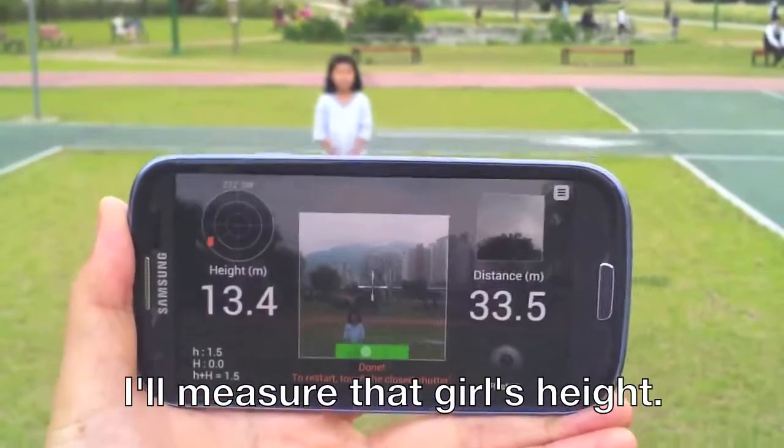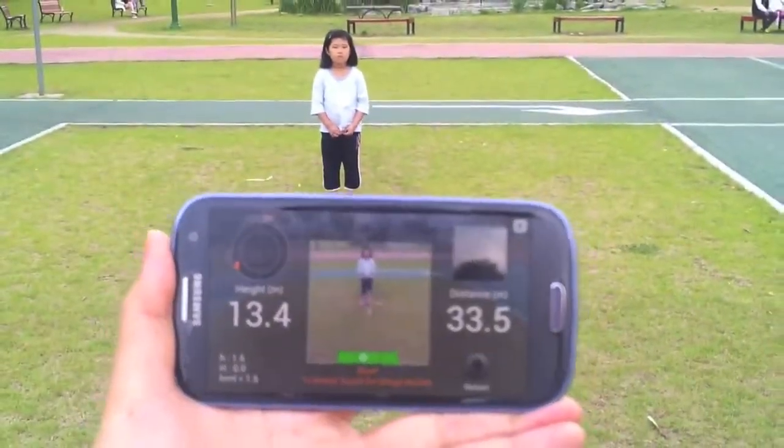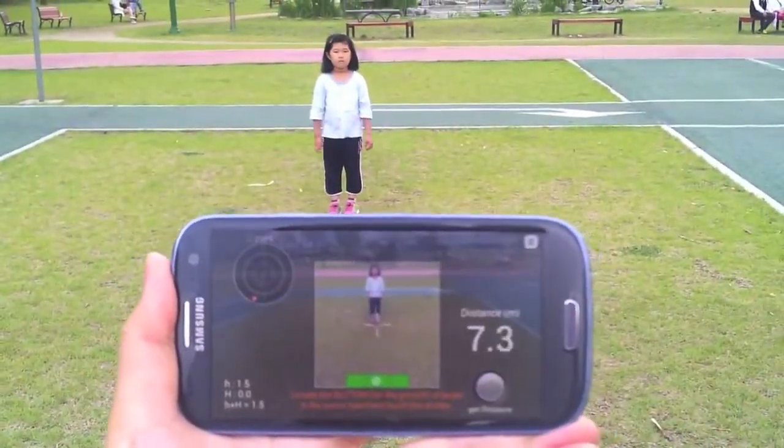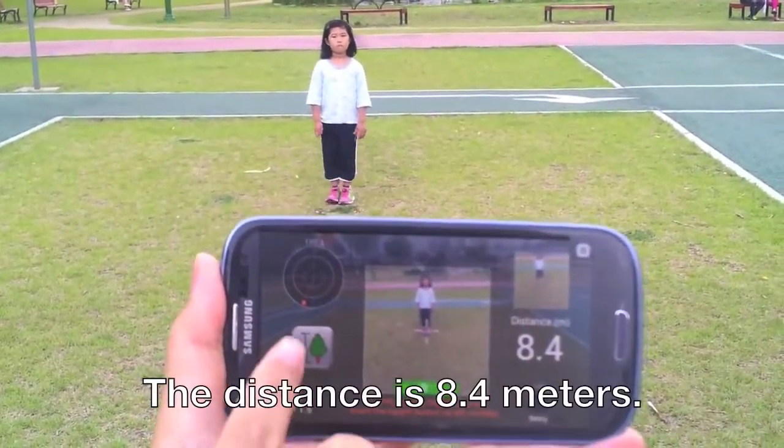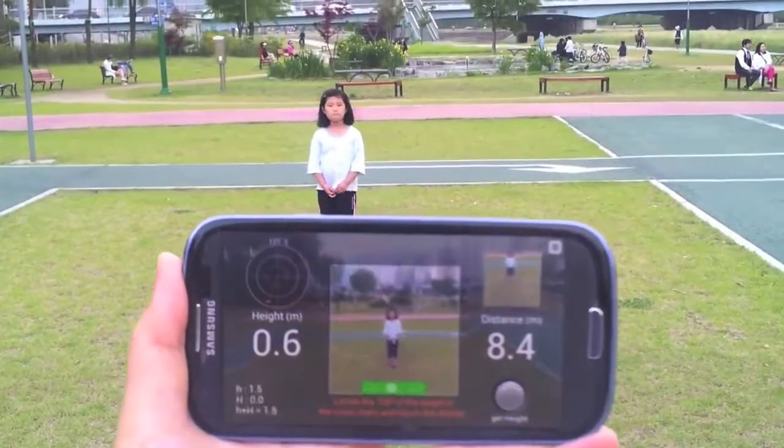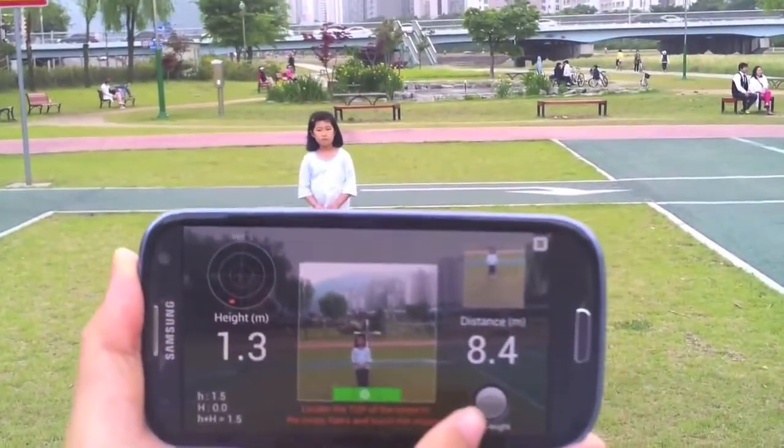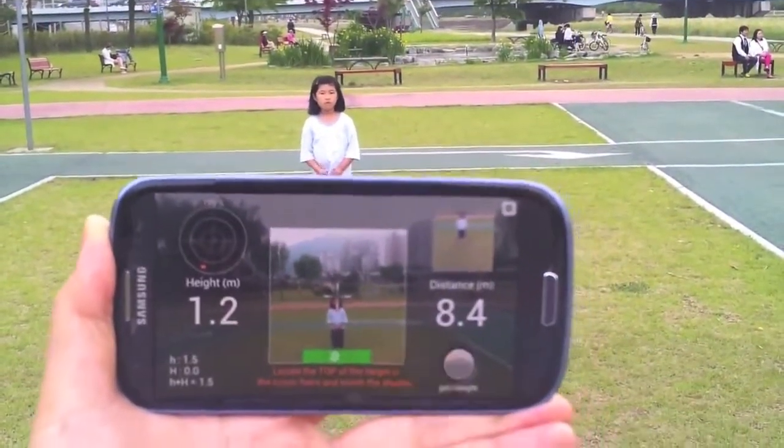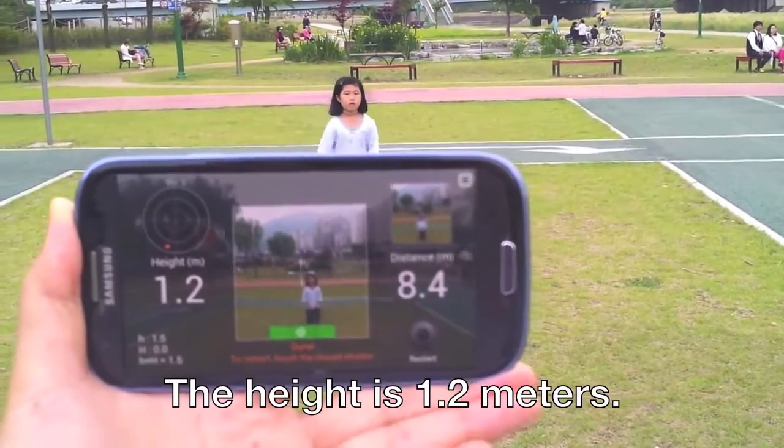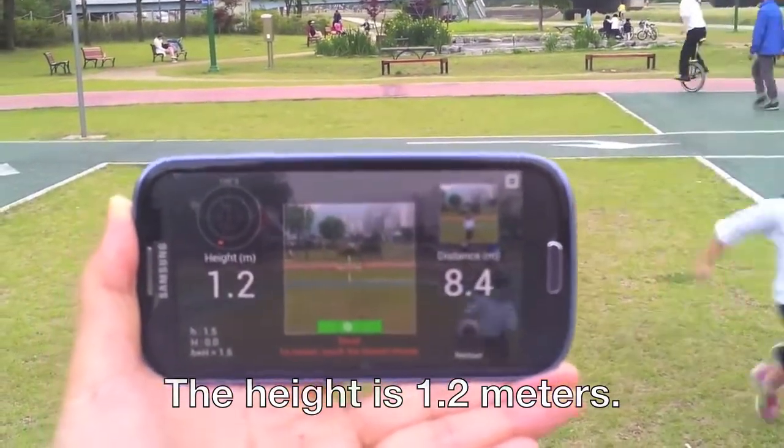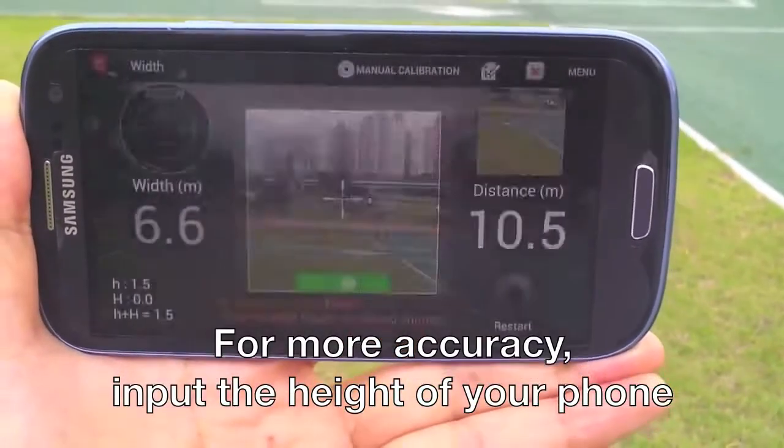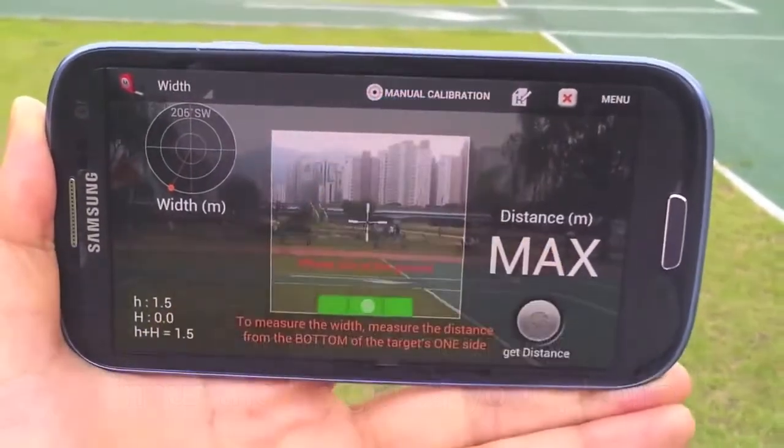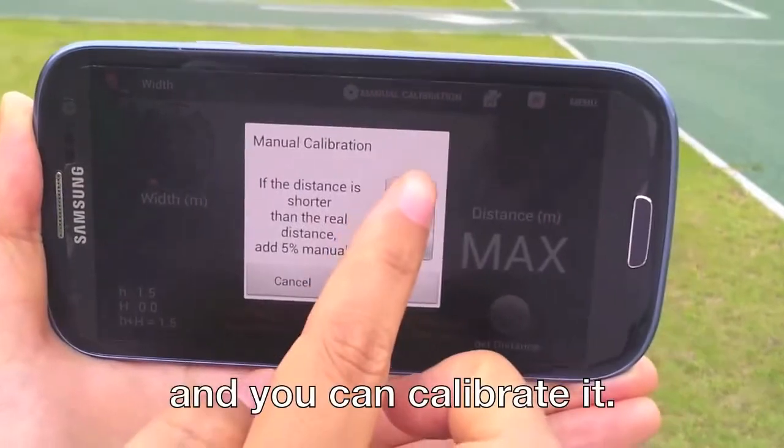I'll measure the girl's height. The distance is 8.4 meters. The height is 1.2 meters. For more accuracy, input the height of your phone and you can calibrate it.